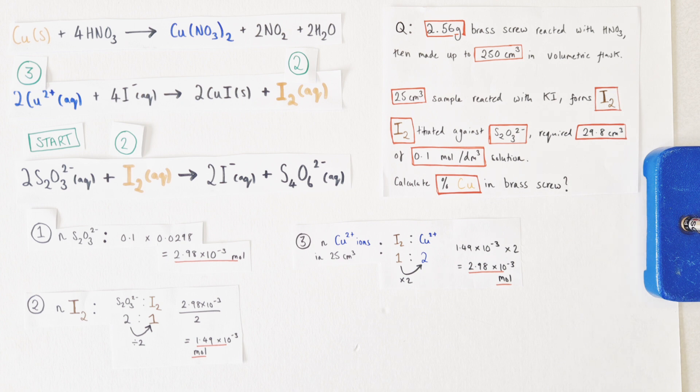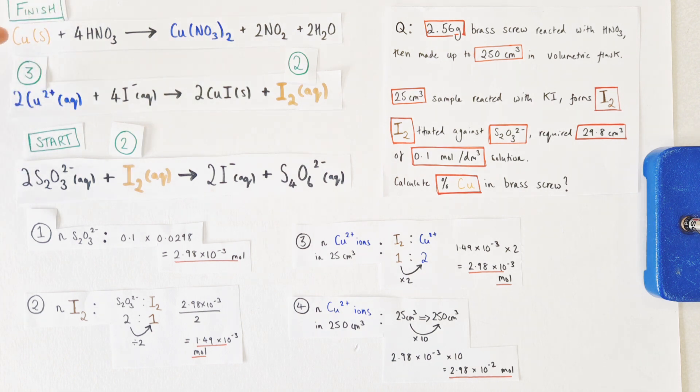Now that 25 centimeter cubed sample of copper ions came from an original larger volume of 250 centimeters cubed in the volumetric flask. That is a tenfold difference of 25 centimeters cubed to get back to the 250 centimeter cubed original volume. So we multiply our number of ions by that same factor, the tenfold increase, that means that in that volumetric flask there must have been 2.98 times 10 to the minus two moles worth of copper ions. And of course all of those copper ions must have come from the original copper in the brass screw. So we now know by association the number of moles of copper ions that must have come from our brass screw in the first place. And now we can get into working out mass and working out percentage by mass with that information.